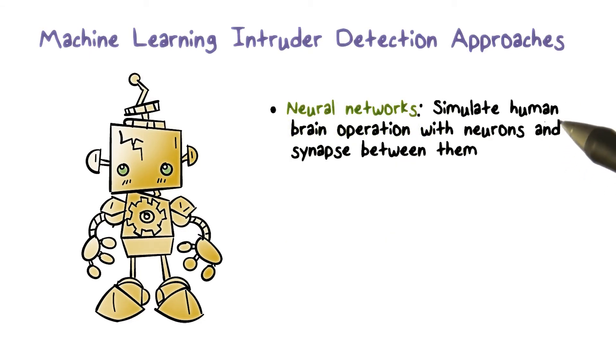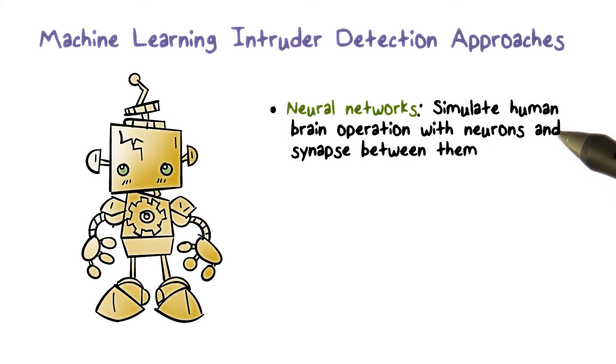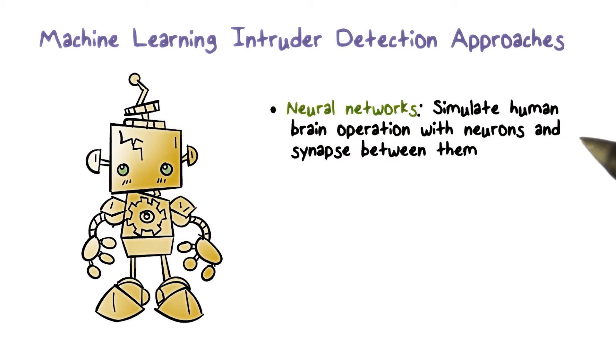Neural networks: a neural network simulates how the human brain performs reasoning and learning. They are one of the most powerful machine learning approaches.